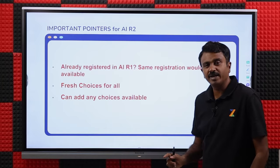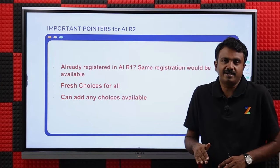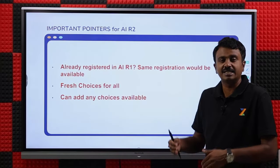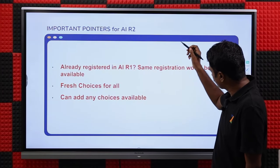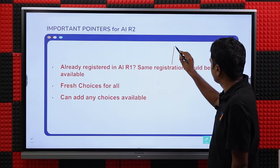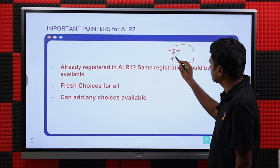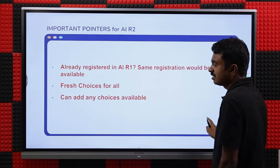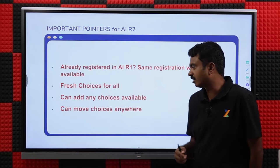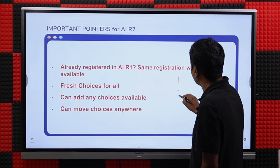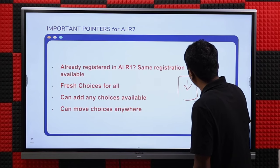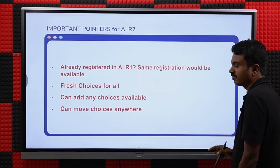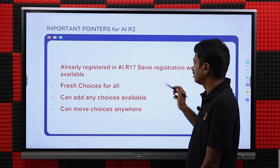You can add any choices in Round 2. It doesn't matter what you added or didn't add in Round 1. You can add a choice that was below or above your previous allotted choice — it's a completely new choice list. Whatever you want, you can add it in any order. You can change the order — move choice 3 to position 1, delete choices — everything is possible because it is a new choice list.